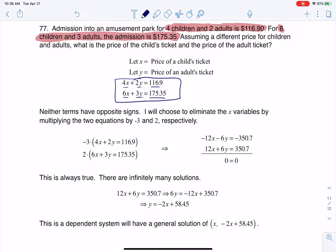If I look at that system of equations, something I notice is none of these numbers have opposite signs. Both X terms are positive, both Y terms are positive, and none of them have coefficients of one.